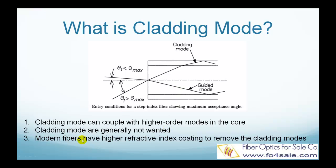Modern fibers have a polymer coating layer with a refractive index that is slightly higher than that of the cladding, so that cladding modes are rapidly attenuated and disappear after only a few centimeters. This is particularly true for single mode fibers.